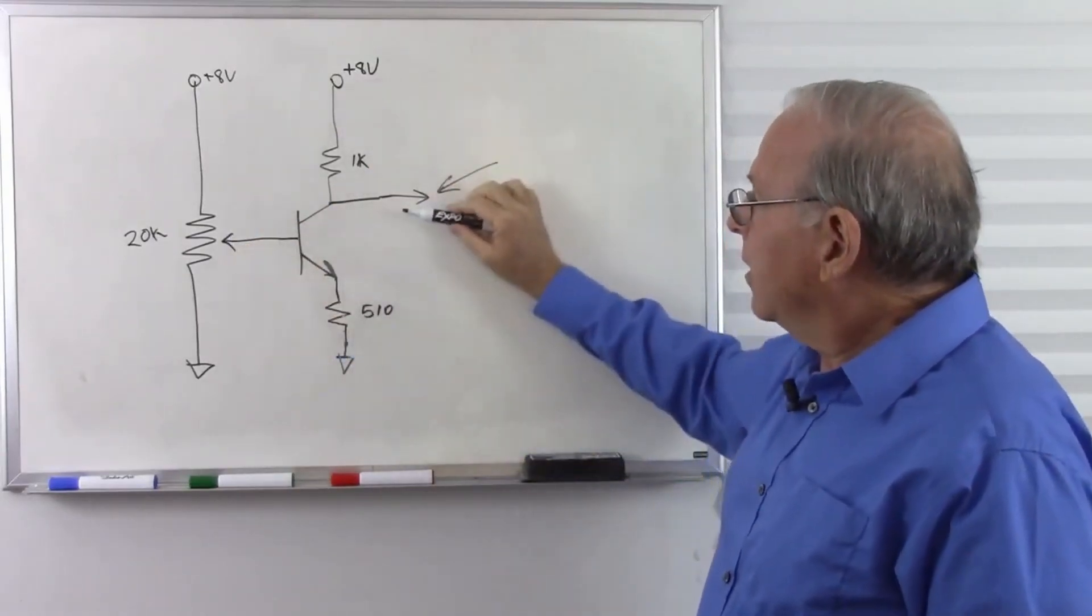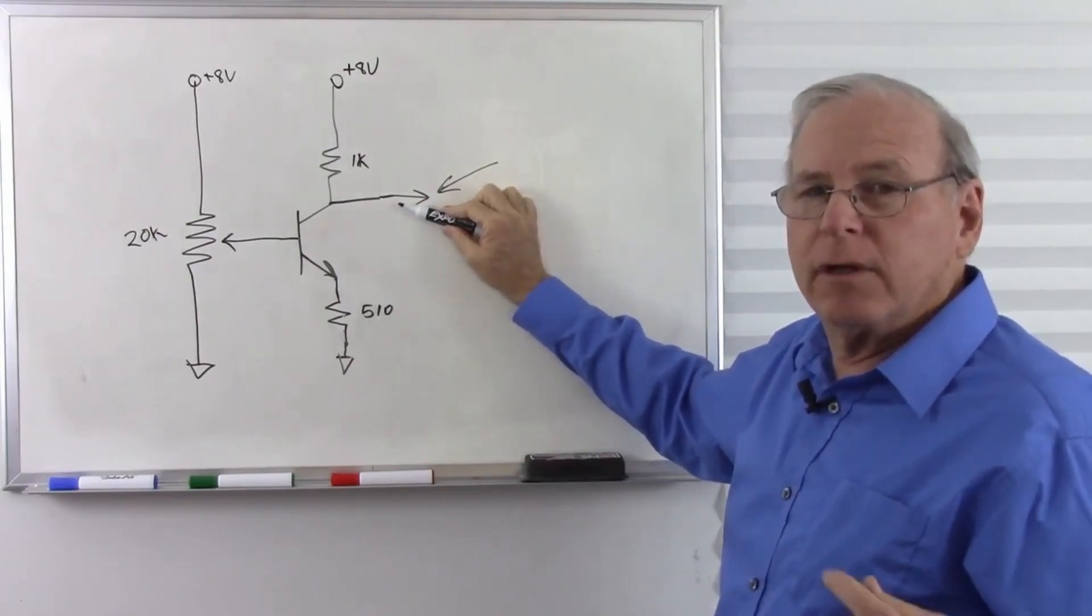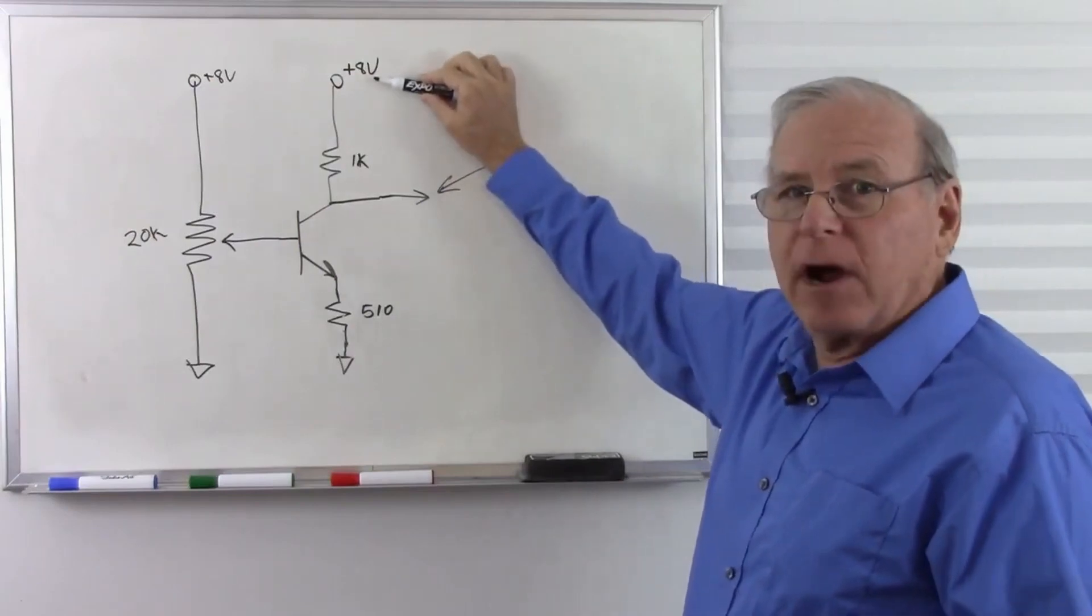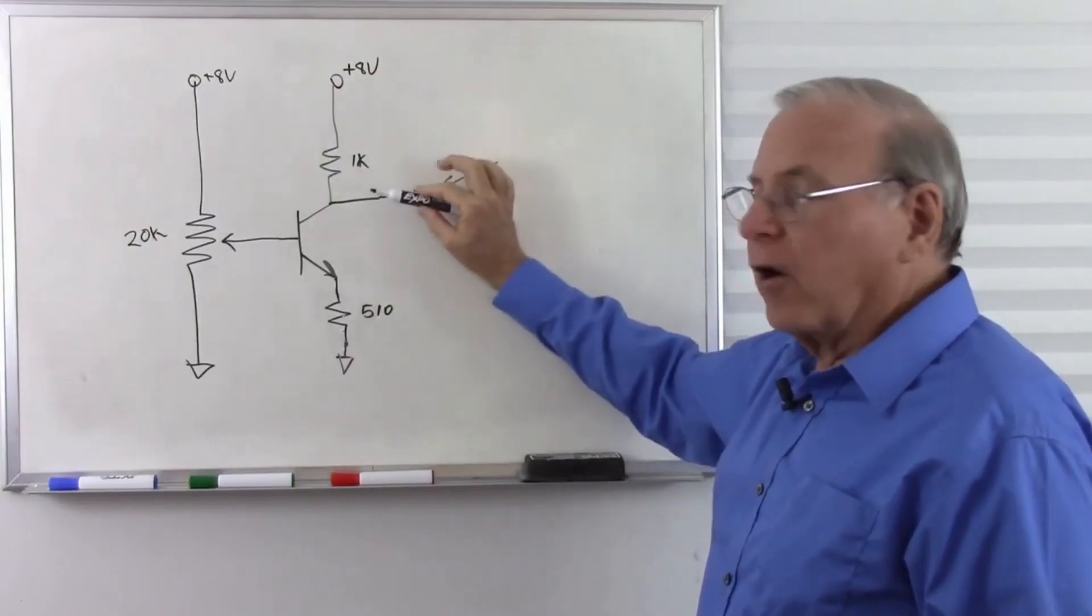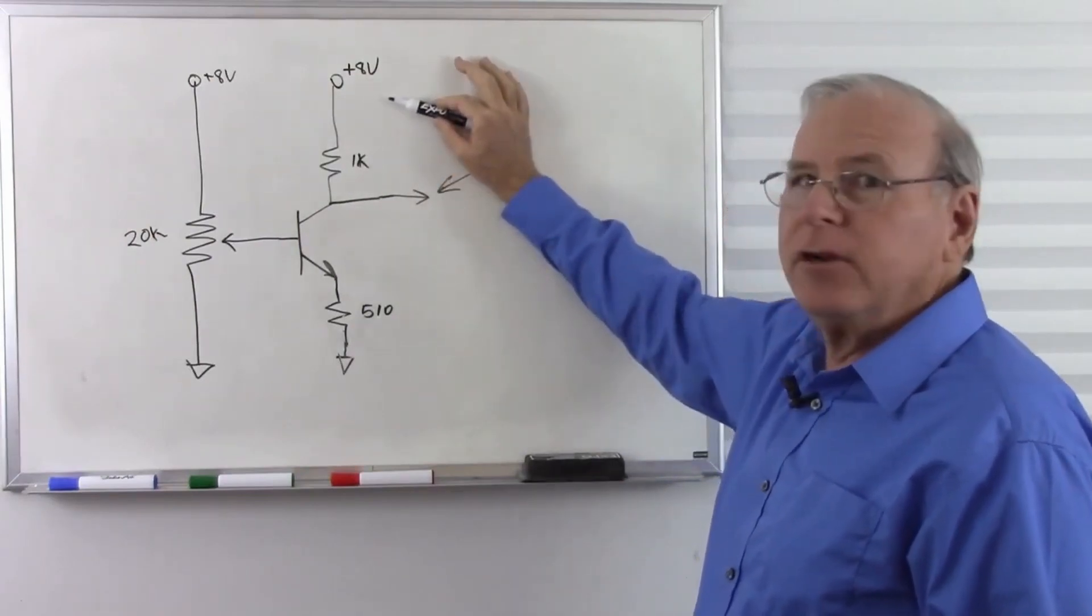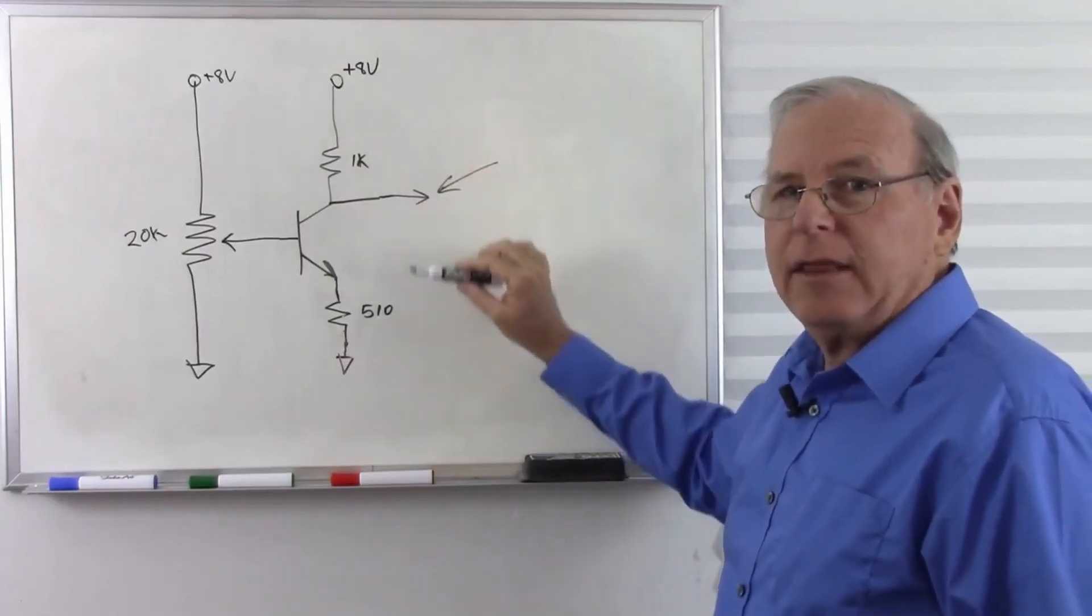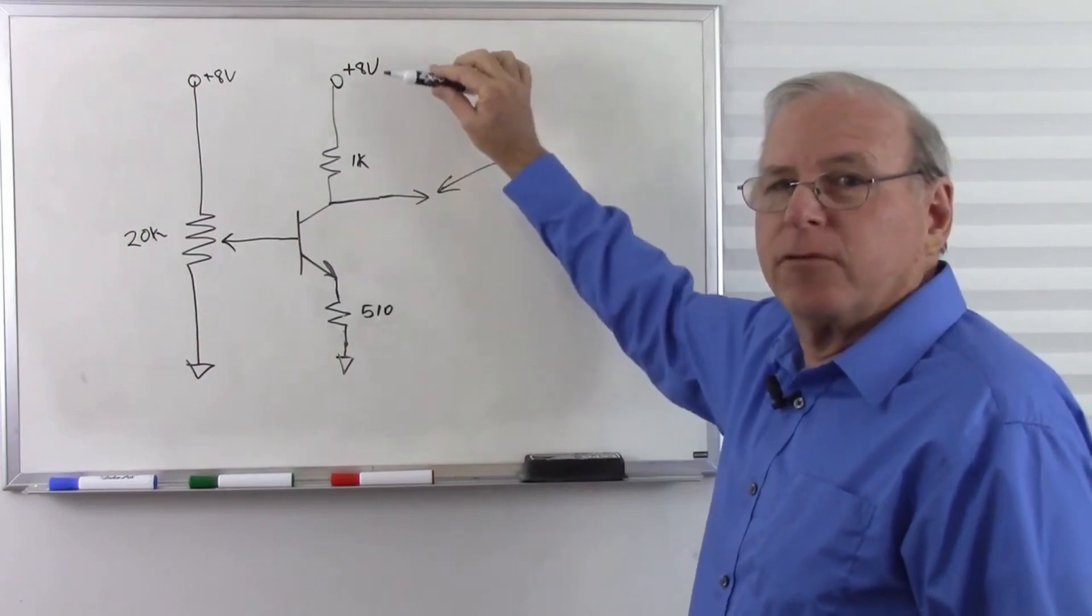Remember that we want the quiescent voltage, in other words the voltage with no signal input, to be one half of our power supply voltage. That way our input can swing it all the way up to 8 volts or all the way down to 0 volts without hitting the limits. We cannot go above 8 volts, we can't go down below 0 volts.